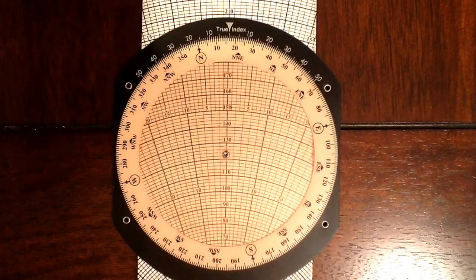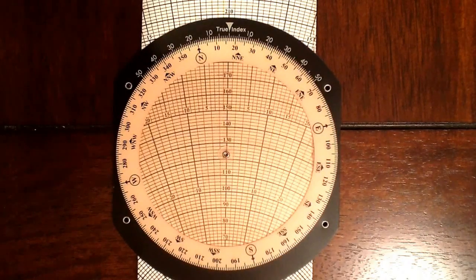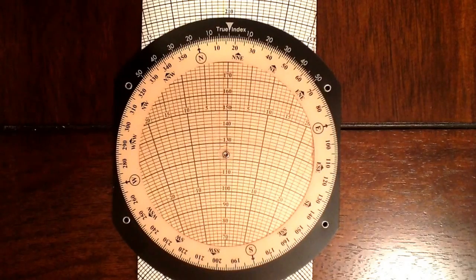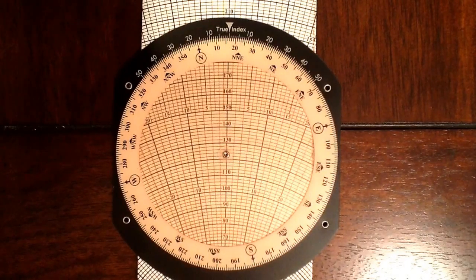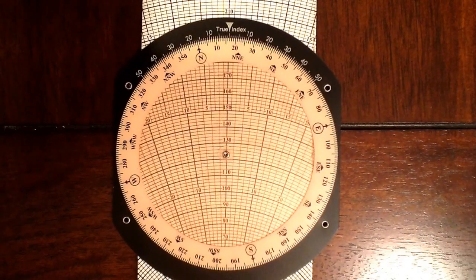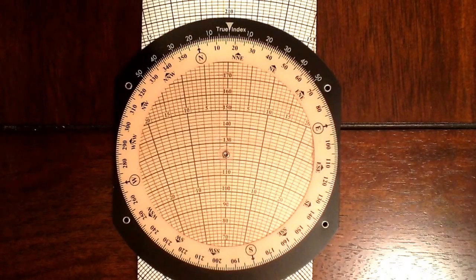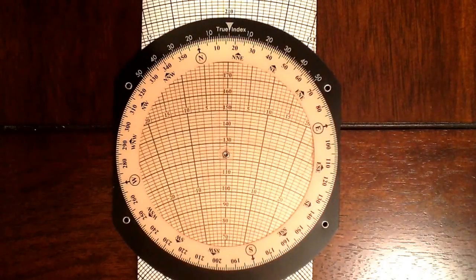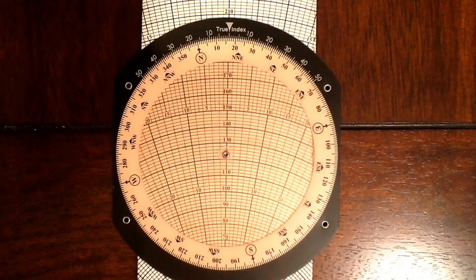There are two ways to use the wind side of an E6B flight computer. One is given wind information, you can determine aircraft heading and ground speed. And two, given aircraft heading and ground speed, you can determine wind direction and velocity. The second method is what we will discuss in this video, and it's useful for the instrument pilot knowledge test.